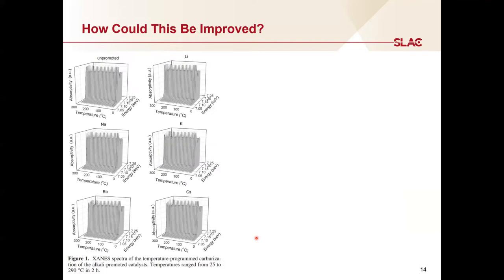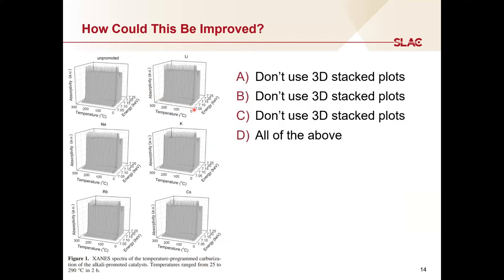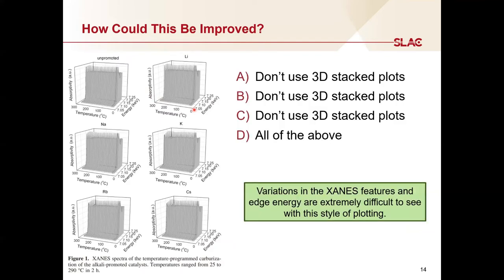Next, we're looking at XANES spectra collected in situ during temperature-programmed carburization of a cobalt catalyst with different alkali promoters. We have axes for energy, absorptivity, and temperature. The answer here should be very obvious: this style of 3D stacked plotting makes it impossible to see changes in the XANES. I don't know if the edge energy is changing, I can't see differences in the shape of the rising edge or XANES features, and I can't tell if there are changes in the pre-edge region. If you're plotting multiple XANES spectra, I highly recommend using the style shown previously. I'll also note that absorptivity is the incorrect y-axis label — it should be normalized absorption.